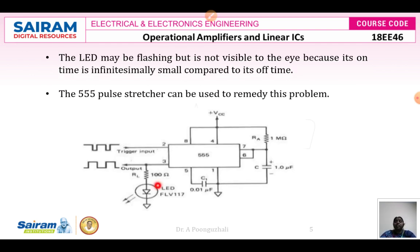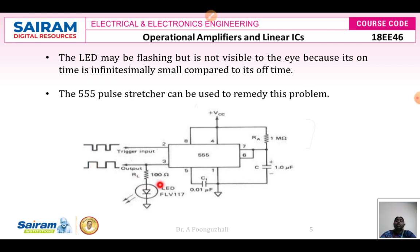The LED may be flashing, but it will not be visible to the eye if the time period is very small. That small time period will not be sufficient to drive the LED circuit. So I should increase the width of the pulse — if I stretch the width of the pulse, then I can see the LED flashing. Once the trigger pulse goes below 1/3 VCC, the output goes high and the LED glows. If the duration of the output waveform is very low, the flashing of the LEDs will not be visible. In order to make the LED flashing visible, I have to make the pulse width duration larger.